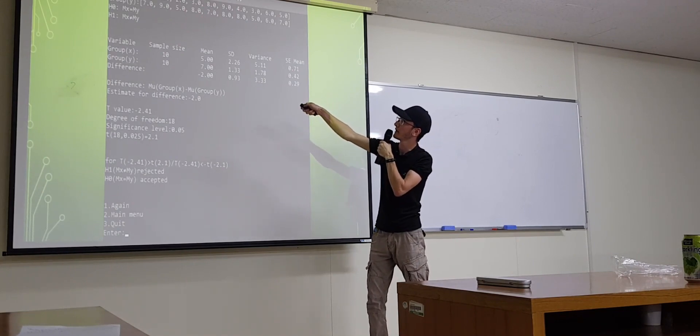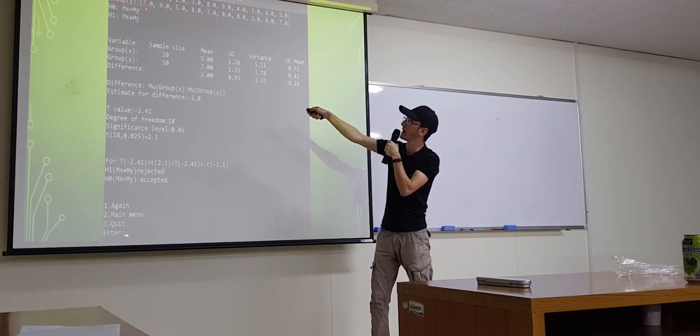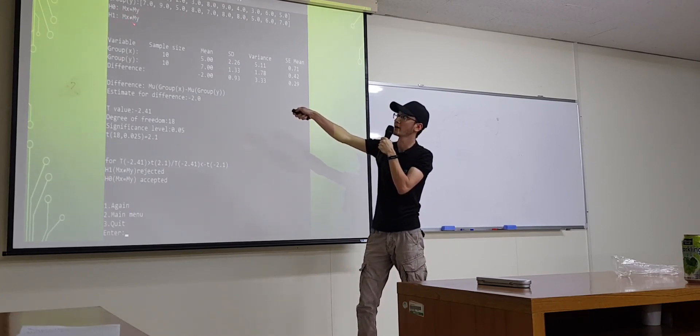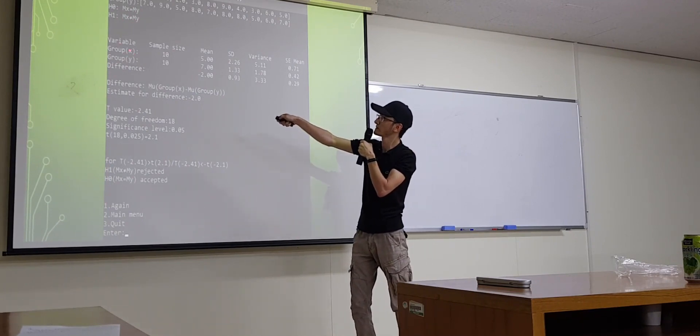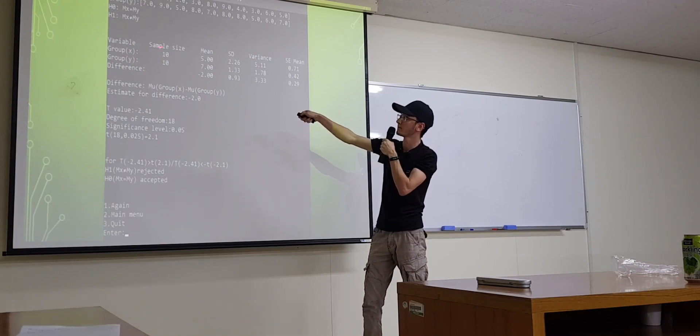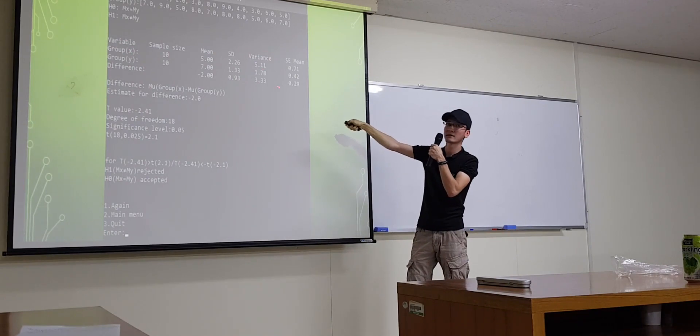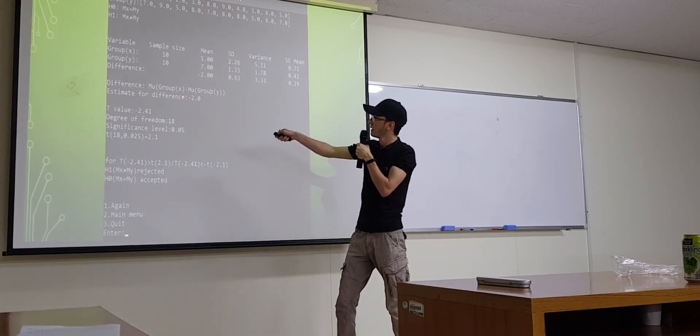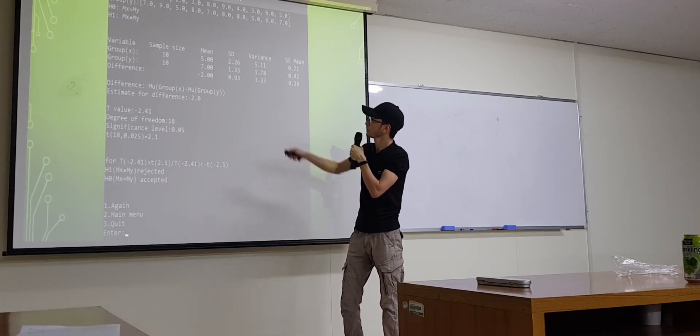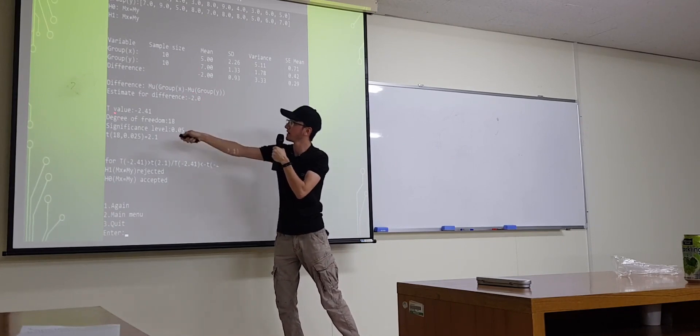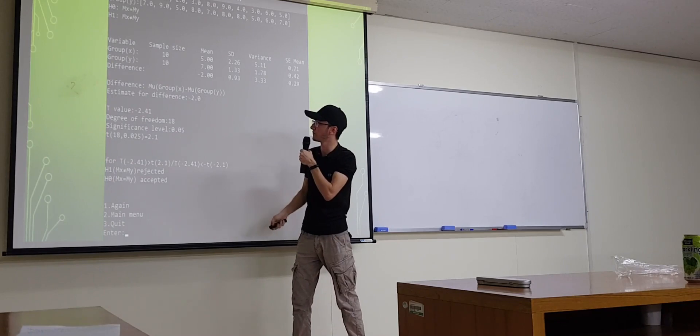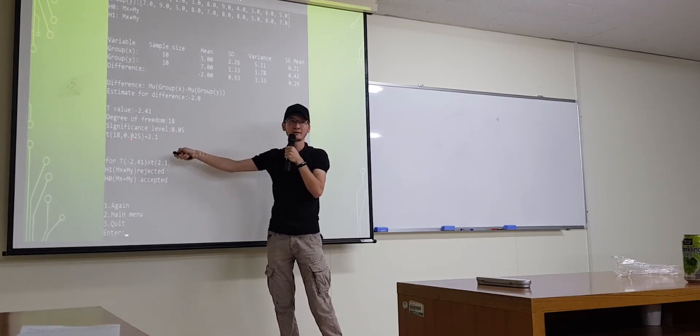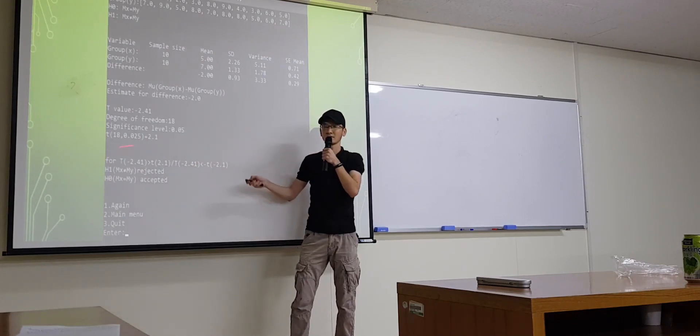Here, you can see the results. This is, these are data for group X. This is data for group Y. And our null hypothesis is mu X equal to mu Y. And alternative hypothesis is mu X not equal to mu Y. Here we have variables, group X, group Y, and difference. We have ten samples. This is mean. This is standard deviation. This is variance. This is statistical, standard error, standard deviation error, mean. And estimate for difference. Here, estimate of difference. And we have t-value. This is minus 2.41. And degree of freedom, significance level. This is standard. And we have t-critical.